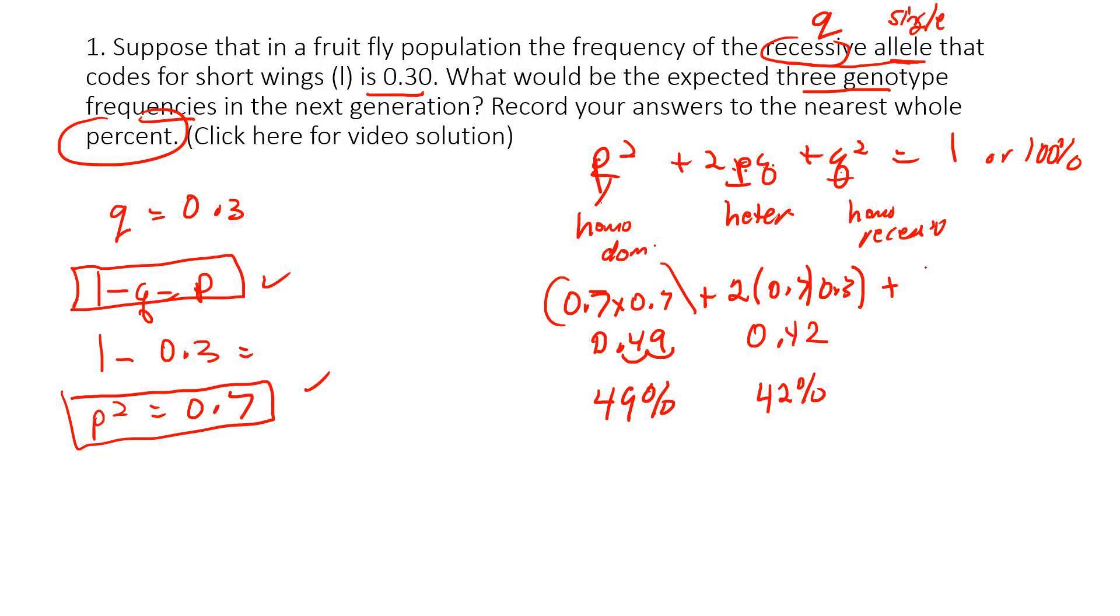This one is 0.3 times 0.3. That squared means multiply it by itself, so we get 0.09. Multiply that by 100 and we get 9 percent. Add up all those percentages and we do indeed get 100 percent. Those are the three genotype frequencies in percentage.